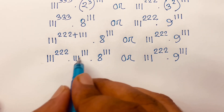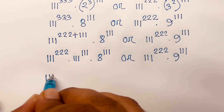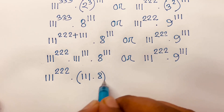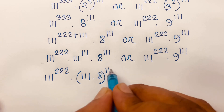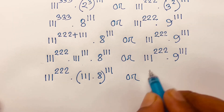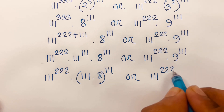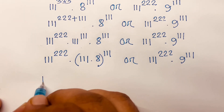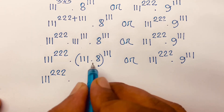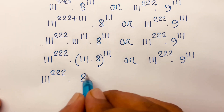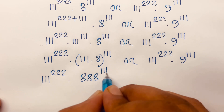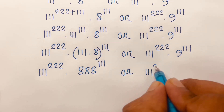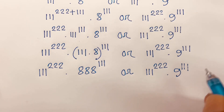Look — the exponents are the same, so I can say it will be 222 in this case. Here is 111 times 8, which equals 888, to the power 111. Or here is 111^222 times 9^111. Then I can say 111^222 times 888^111 compared to 111^222 times 9^111.